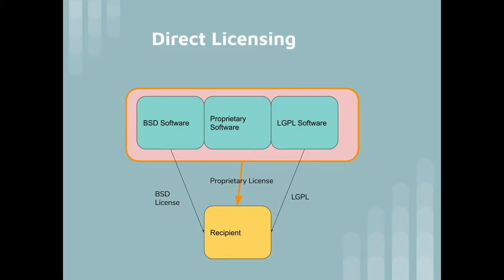Usually, open-source components are combined into a larger product. In that case, the recipient may be getting many licenses simultaneously. While your proprietary license may apply to the combined product, each open-source component also has its own license. In this sense, license notices may not, in effect, govern what the recipients can do with the software in exactly the form in which they receive it from you. Therefore, license notices serve in part as a proxy for attribution or credit. You are telling recipients that they are benefiting from the ability to enjoy the license granted by someone else.